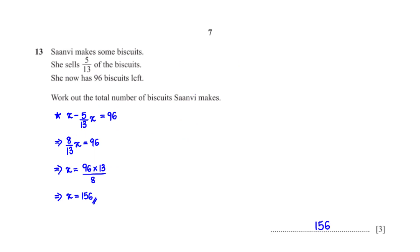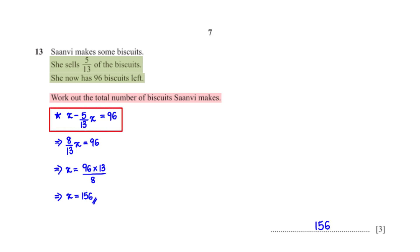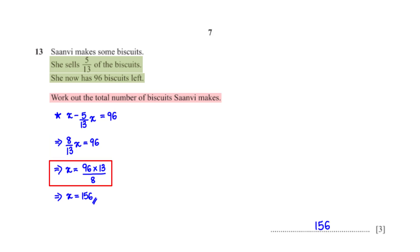Sanvi makes some biscuits. She sells 5 over 13 of the biscuits and now has 96 biscuits left. Work out the total number of biscuits Sanvi makes. Let x be the total. Then x minus 5/13 x equals 96, which simplifies to 8/13 x equals 96. When we make x the subject, we get x equals 156.